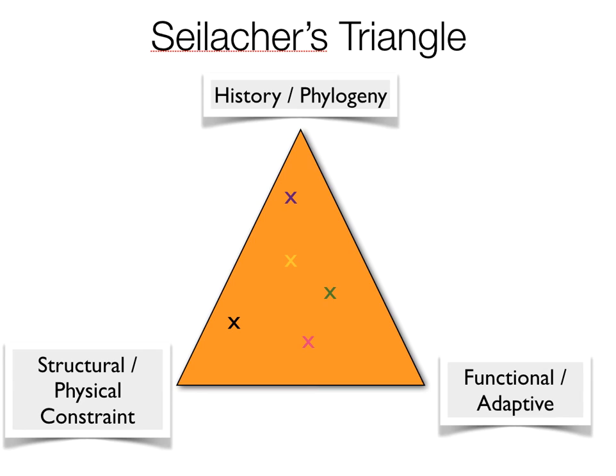Little x's within the triangle represent different traits. An example of a history or phylogenetic trait would be our tailbones — we have tailbones because we used to have tails, an example of our phylogenetic relatedness to other organisms. An example of a functional or adaptive trait would be our opposable thumbs — they're super useful and functional and adaptive for us now.